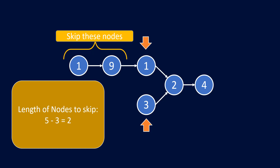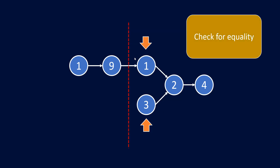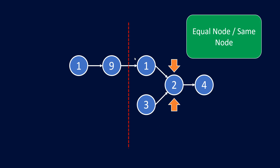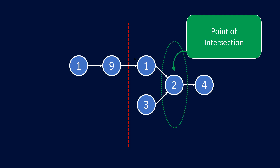The main idea is that we need to reach the intersection point at the same time. Once we start from these aligned nodes, we keep moving until we find an equal node — checking for equality at each step. When we reach the intersection node, we can say these two nodes are the same and return that node. If we do not find any intersection and the pointers come out to be null at the end, we return null because both lists were exclusive with no intersection.